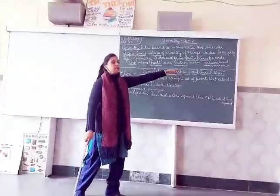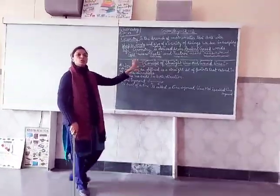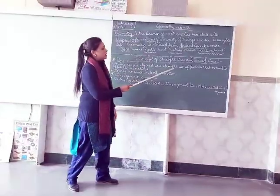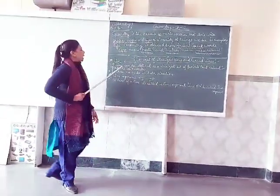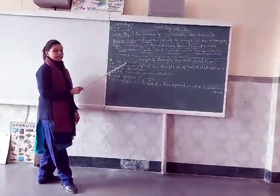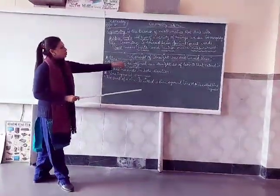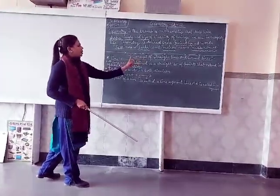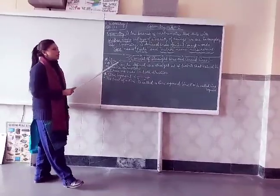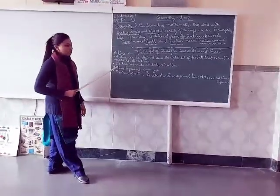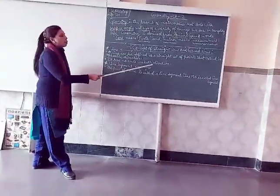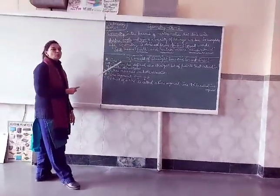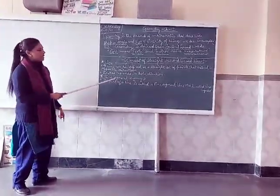Before anything, first of all we need to know what is a line. A line can be defined as a straight set of points that extend in opposite directions. You can see here I have drawn a line that has two points, which you can extend from any direction — from the right side or left side — because the line has no end. It has no end in both directions, as shown by arrows on both sides.